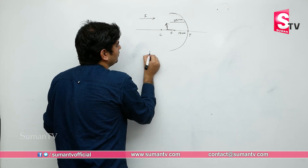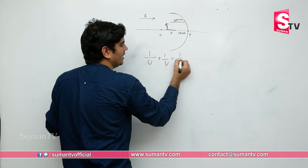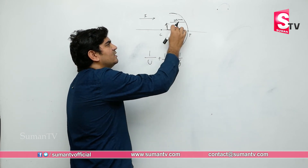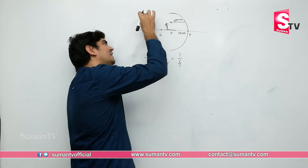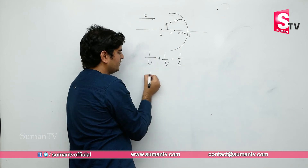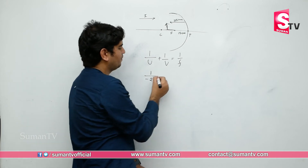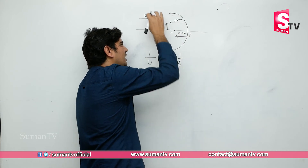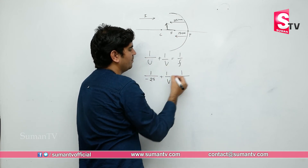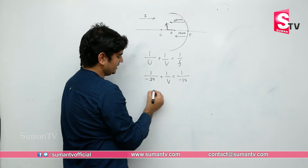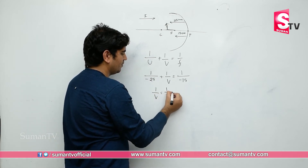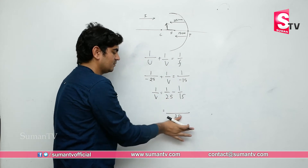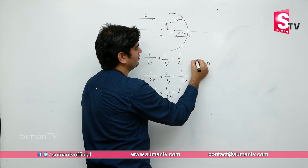Let us solve for the image distance. Using 1/u + 1/v = 1/f, with sign convention: u is opposite to the incident ray direction so it is minus 25, and F is also opposite so it is minus 15. Therefore: 1/(−25) + 1/v = 1/(−15). Rearranging: 1/v = 1/25 − 1/15.